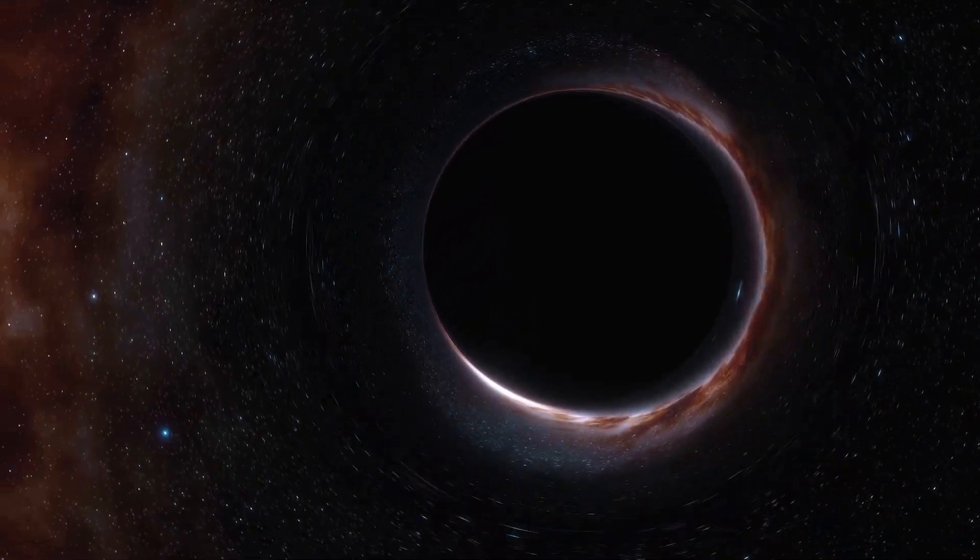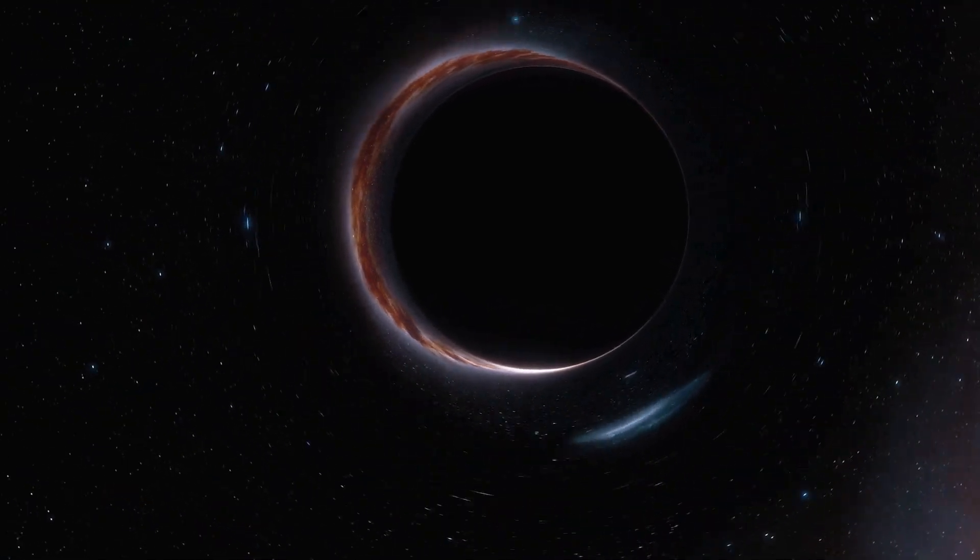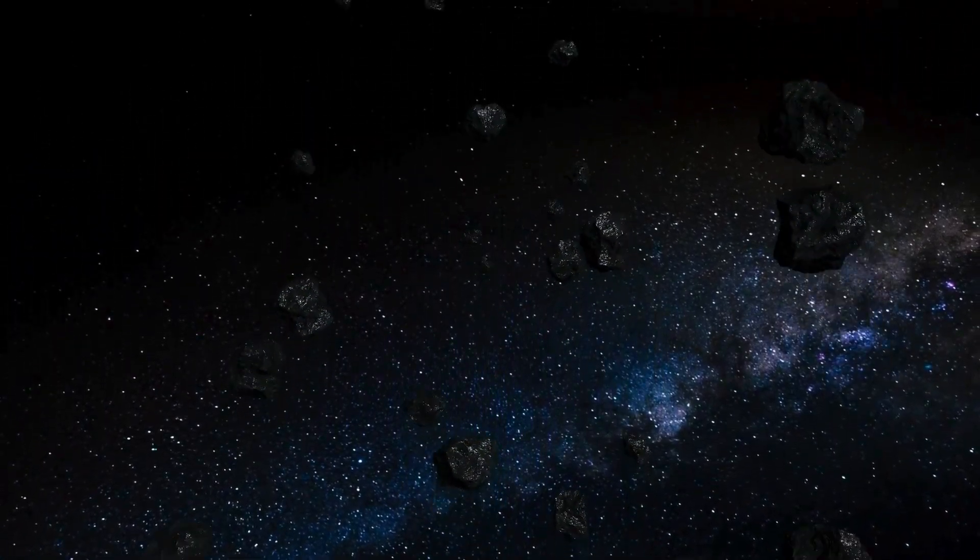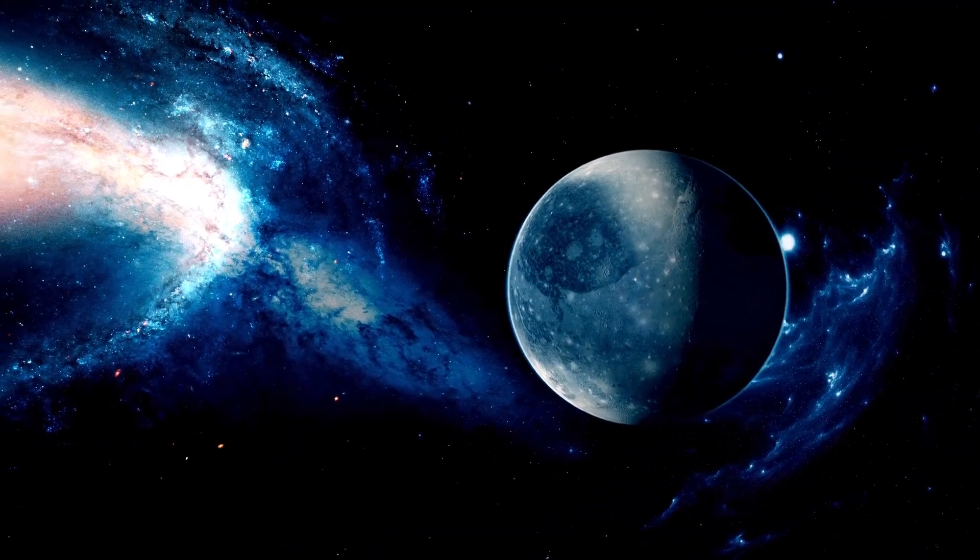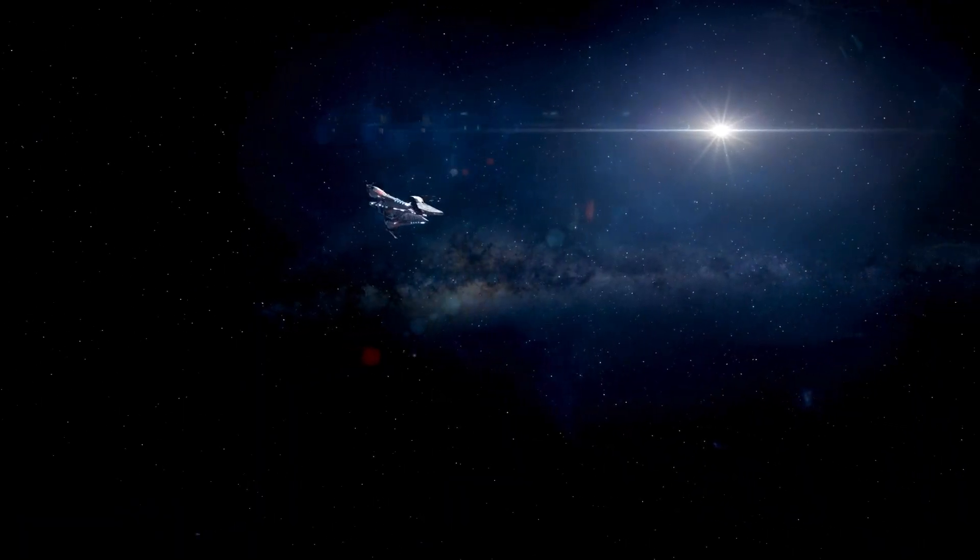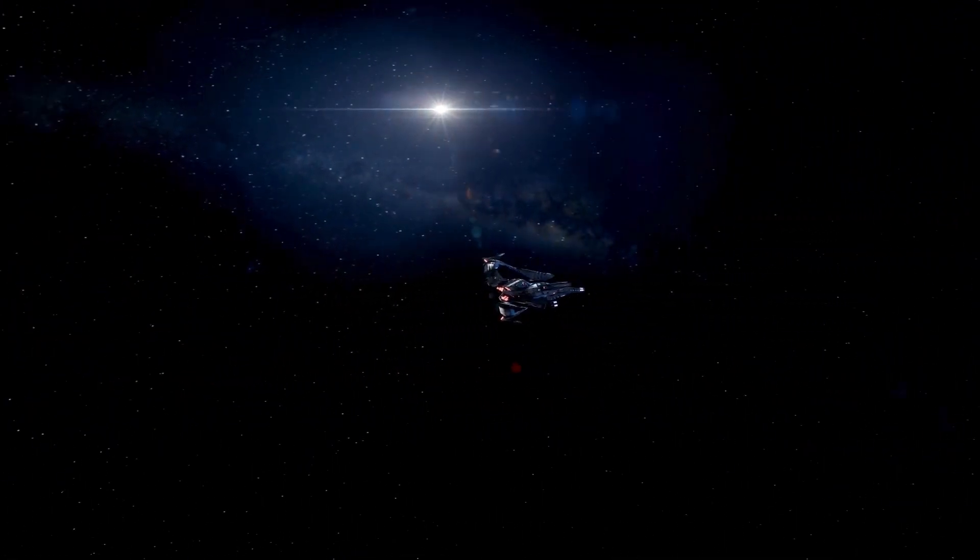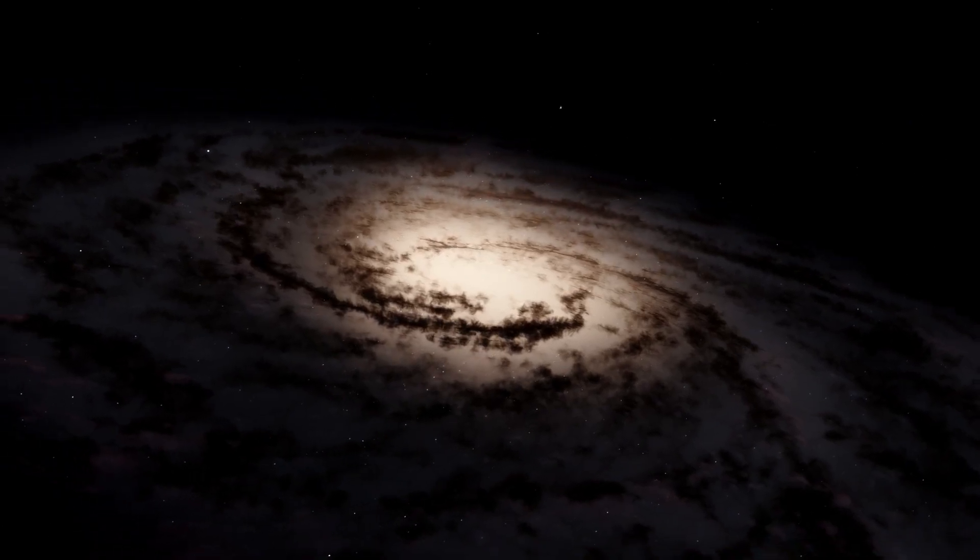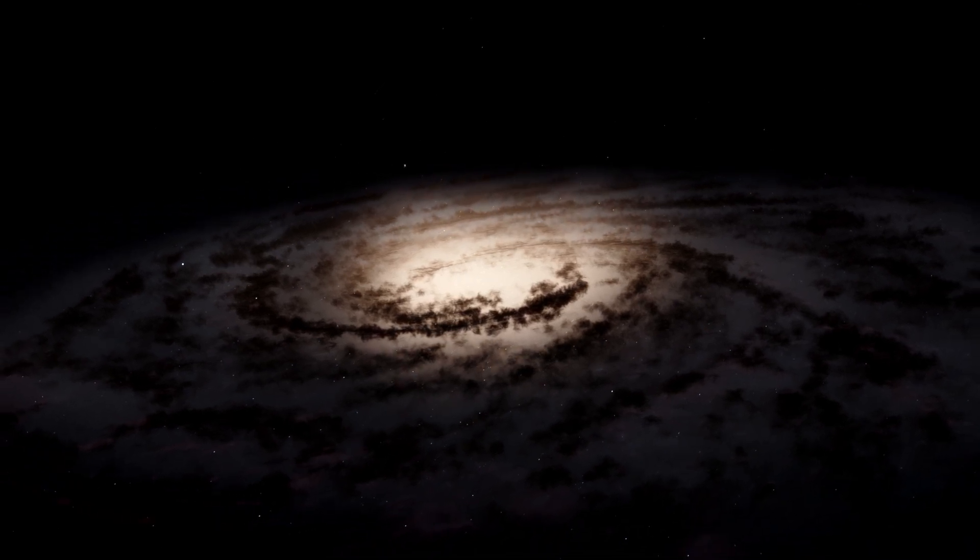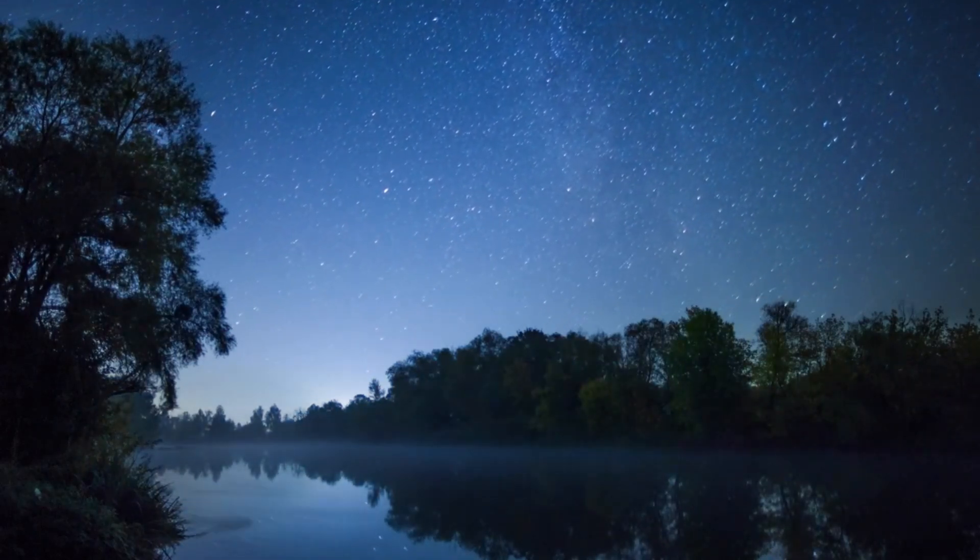The event horizon marks the boundary beyond which nothing can escape the black hole's gravity—a point of no return where the escape velocity exceeds the speed of light. Interestingly, black holes aren't entirely black. Stephen Hawking theorized that they emit a faint radiation, now known as Hawking radiation, due to quantum effects near the event horizon. Over incredibly long timescales, this radiation can cause black holes to lose mass and eventually evaporate. Black holes are not just cosmic vacuum cleaners—they are key players in the universe's grand tapestry, influencing the formation of stars, galaxies, and even the very fabric of space-time itself.